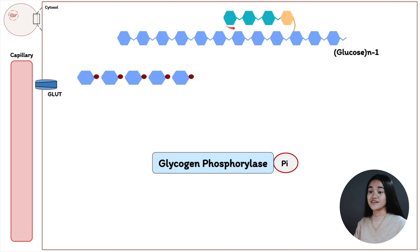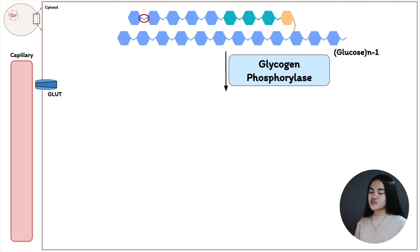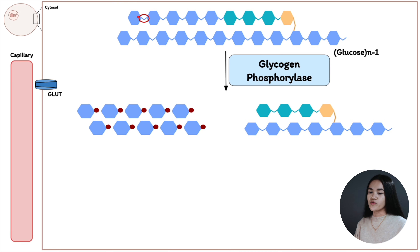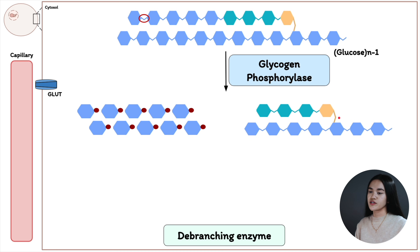Once glycogen phosphorylase stops four glucose residues away from an alpha 1-6 linkage, the second enzyme — the debranching enzyme — comes in. To recap: glycogen phosphorylase breaks alpha 1-4 linkages, producing glucose-1-phosphate, and stops four glucose molecules away from an alpha 1-6 linkage. We count one, two, three, four residues from the branch point, and that's where it halts.